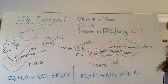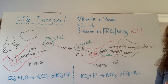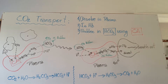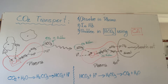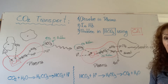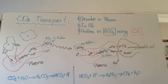I would like to explain with this graphic how carbon dioxide is transported. In the previous video we talked about how oxygen is transported, and now is the time to talk about carbon dioxide transport. Carbon dioxide is way more dissolvable in water — in other words, in plasma. There are three most common ways it is transported. One is dissolved purely in plasma.